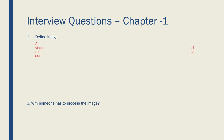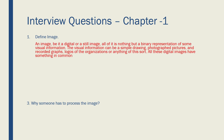Define an image. An image — whether digital or still — is nothing but a binary representation of some visual information. The visual information can be a simple drawing, photograph, features, or recorded graphs. Images have some information in them. An image is nothing but a binary representation of some visual information — this is what you need to remember.